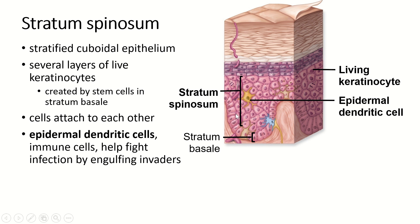These are live keratinocytes. Remember, keratinocytes are the cells that make keratin. They're created by the cells down here in the stratum basale. Some of them do go on to do mitosis — you can see one here and one here doing mitosis. But mostly they're produced by the cells down here, and the intercellular junctions between them are the things that make this layer look spiny.